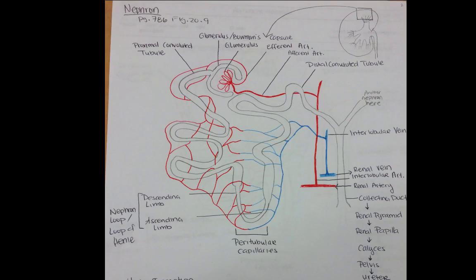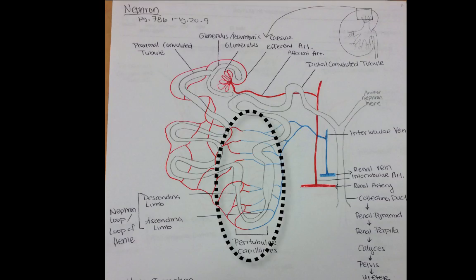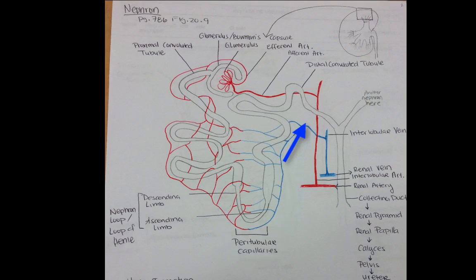Once you pull all that liquid and waste from the blood into the glomerular capsule, the blood will flow back into the efferent arteriole and continue through. Notice where we have the exchange of carbon dioxide and oxygen — this mesh of capillaries is called your peritubular capillaries, which was one of your vocab words. Blood will flow back through these interlobular veins and then back out of the renal vein and then back to the inferior vena cava. That was just the flow of blood — now we have to do the flow of urine.